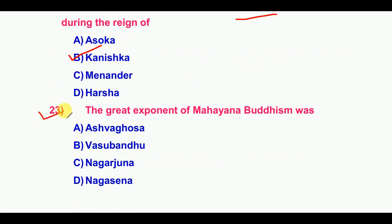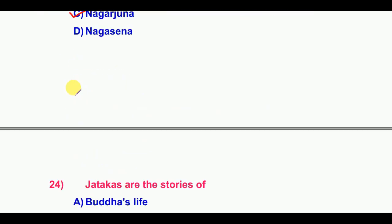Twenty-third question: The great exponent of Mahayana Buddhism was — the answer is Nagarjuna.